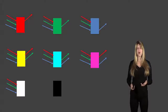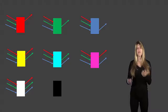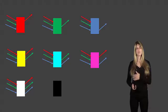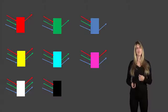For a white object, white light comes in — red, green, and blue — and all three colors are reflected. When red, green, and blue combine, we know from our Venn diagram that makes white. A black object has all three colors of light coming in, but no colors are reflected — all of the light is absorbed and none is reflected, which is why it looks black.